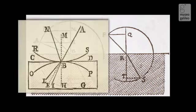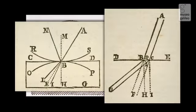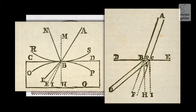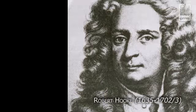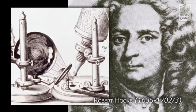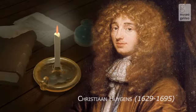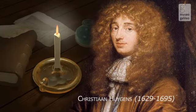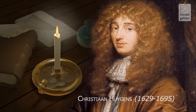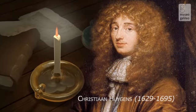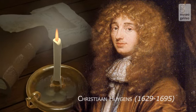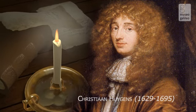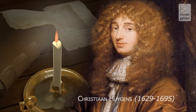The phenomenon of diffraction, already observed by Grimaldi, was studied by Hooke, who proposed a wave theory of light. Huygens regarded light as a disturbance of ether, an impalpable medium composed of elastic particles capable of propagating impulses.